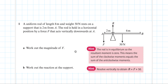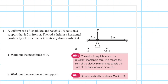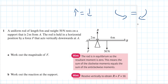The last question: a uniform rod of length 8 metres and weight 50 Newtons rests on a support 2 metres from A. The rod is held in a horizontal position by a force F acting vertically downwards at A. We assume it's in equilibrium. That means the upward and downward forces balance, and the total moments are equal — anti-clockwise equals clockwise.